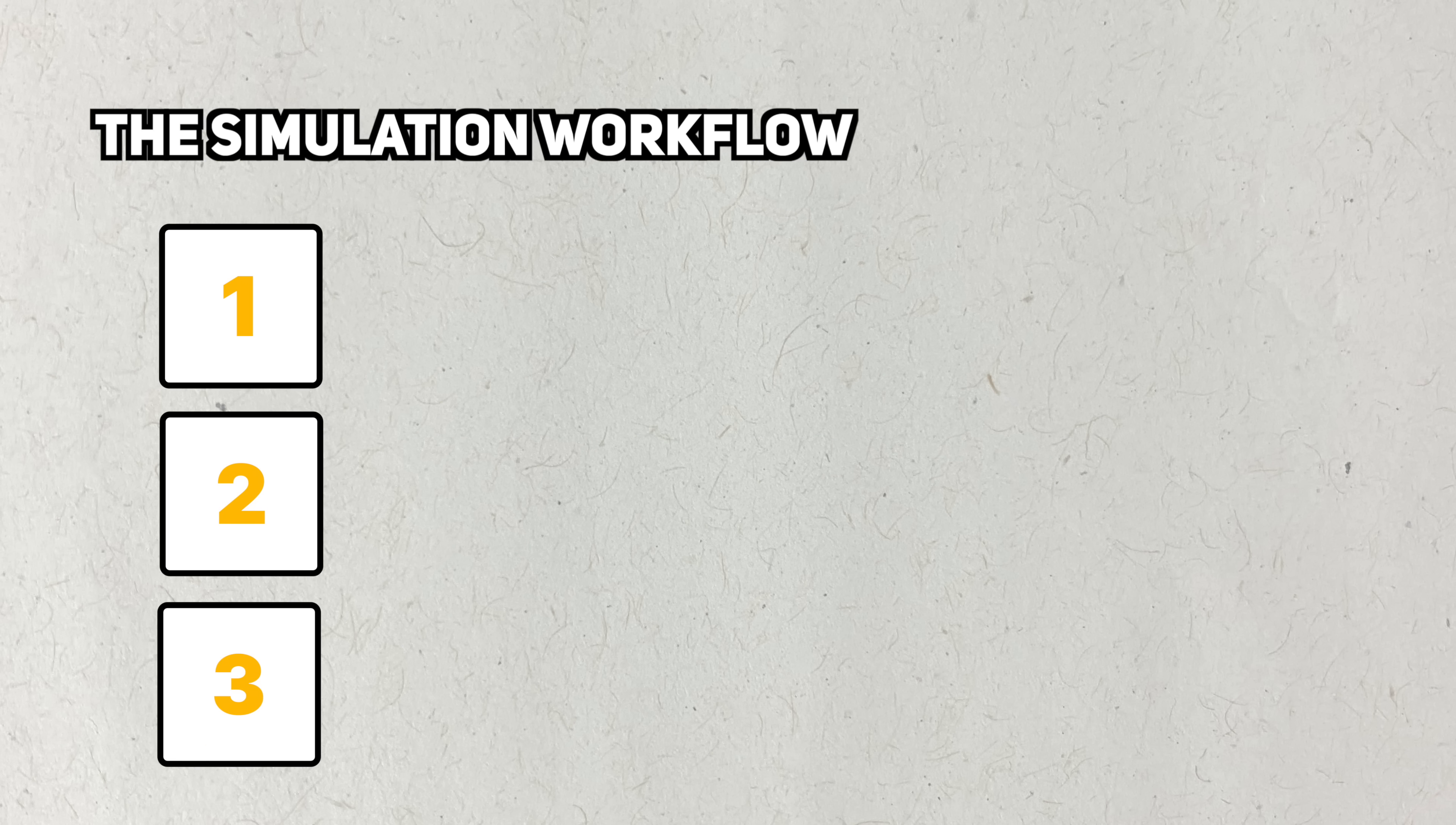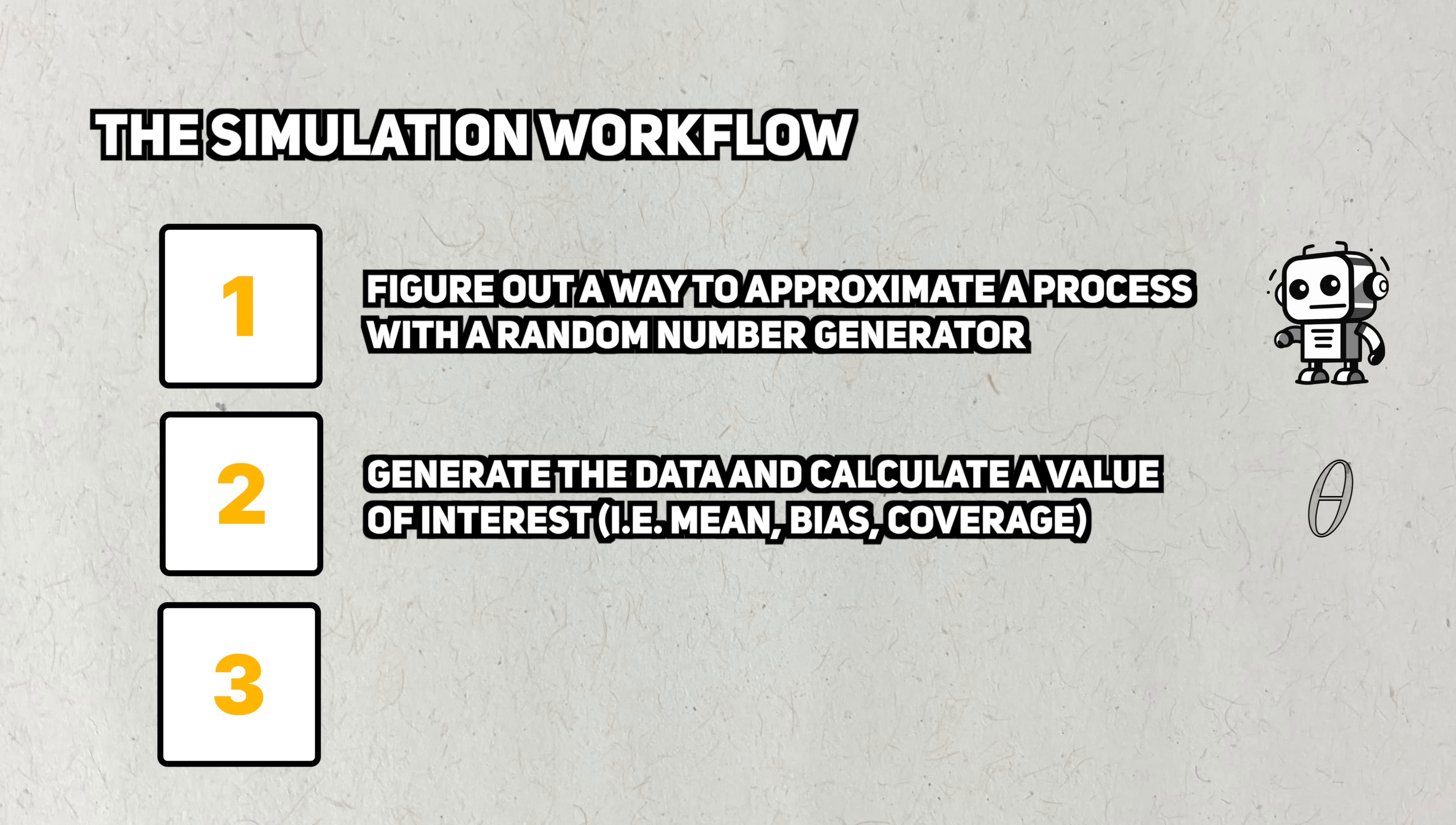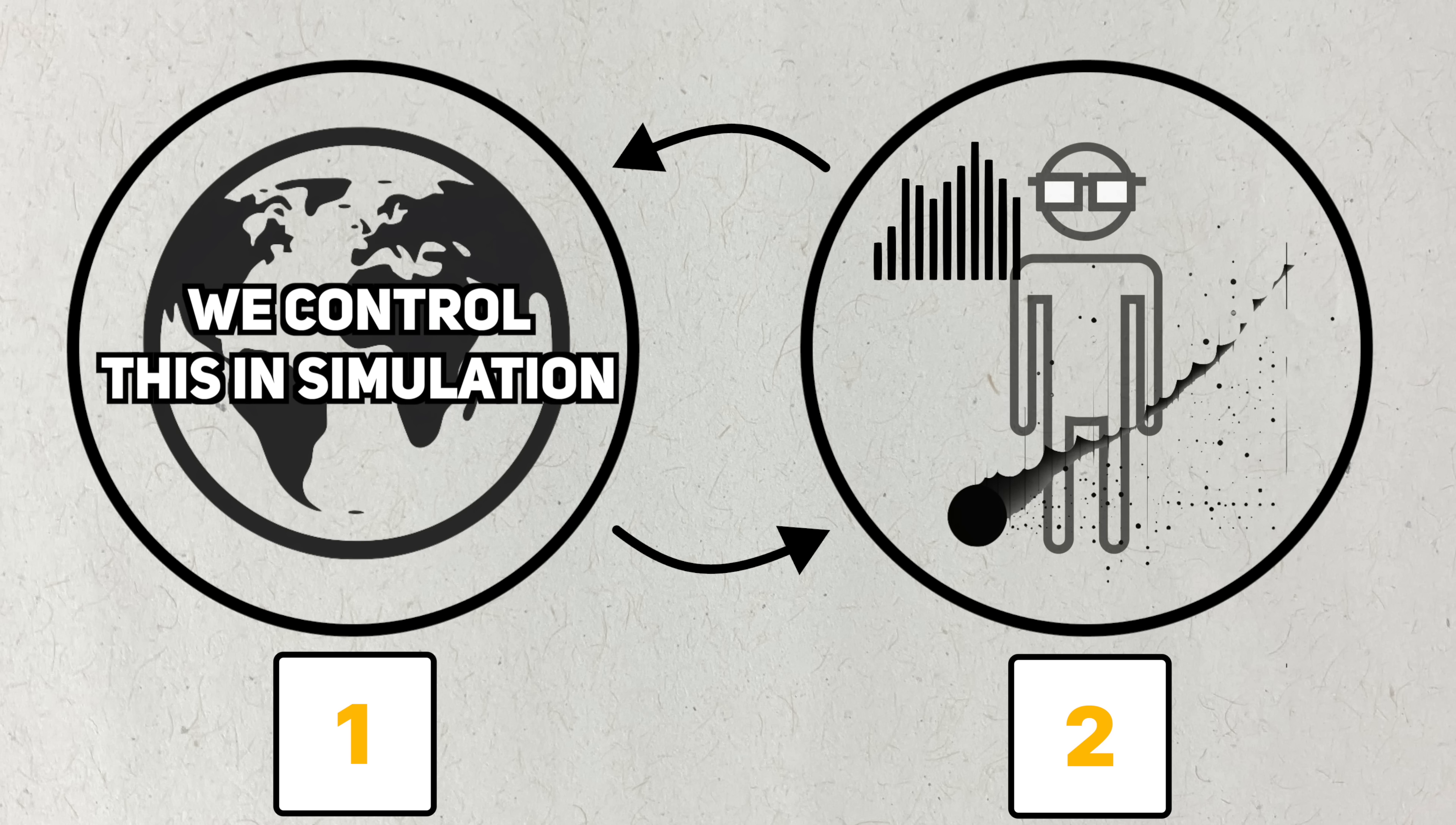Now I'll explain how Monte Carlo simulations may be used by statisticians of varying levels of expertise. No matter how skilled a statistician is, a simulation study has the following workflow. One, figure out a way to generate data from a random number generator in a way that approximates a more complex process. Two, generate a dataset from this process and calculate a value of interest. Three, repeat steps one and two many, many times to get the probability distribution of this numerical result. Some of you might notice that this workflow almost perfectly matches the diagram I showed you earlier, but instead of relying on the real world to generate data for us, we take control of that.